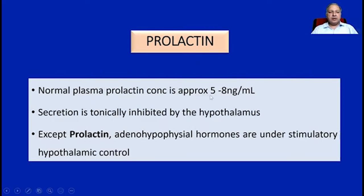Plasma prolactin concentration is 5-8 nanograms per ml. An important thing to remember is that all other hormones released from the anterior pituitary are stimulated by releasing factors from the hypothalamus. But in the case of prolactin, there is an inhibitory tonic control over the release of prolactin hormone from the anterior pituitary. Therefore, except prolactin, adenohypophysial hormones are under stimulatory hypothalamic control.